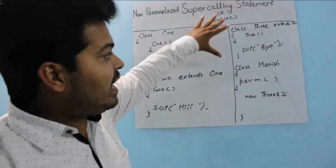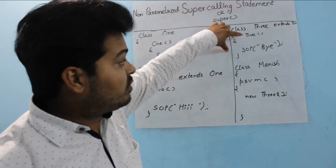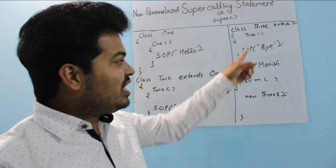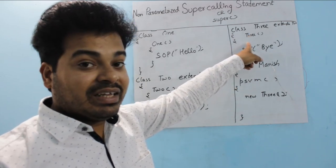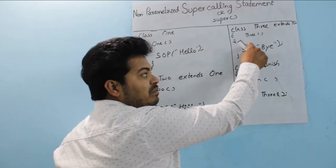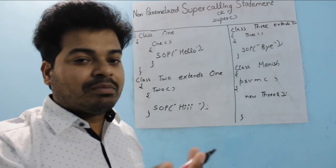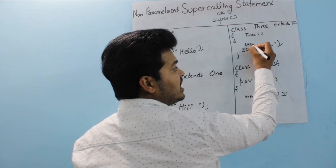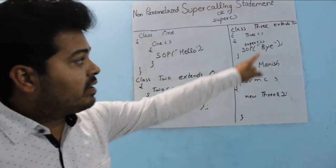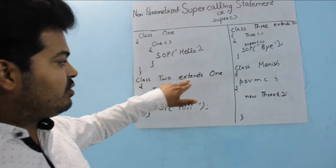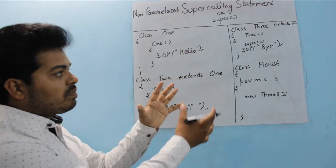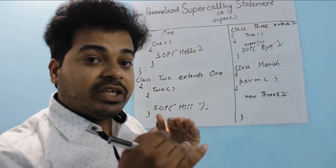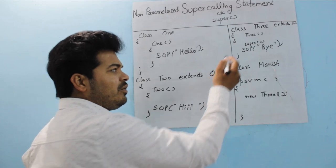I will create an object of Class3 — 'new 3'. Once I do this, execution starts from the Class3 constructor. But here is a twist: if you don't mention the super calling statement explicitly, the compiler itself will write it with no parameter. So wherever you see inheritance and a constructor, to call from subclass constructor to the immediate superclass constructor you need super calling statement — if you don't write it, the compiler writes it for you.